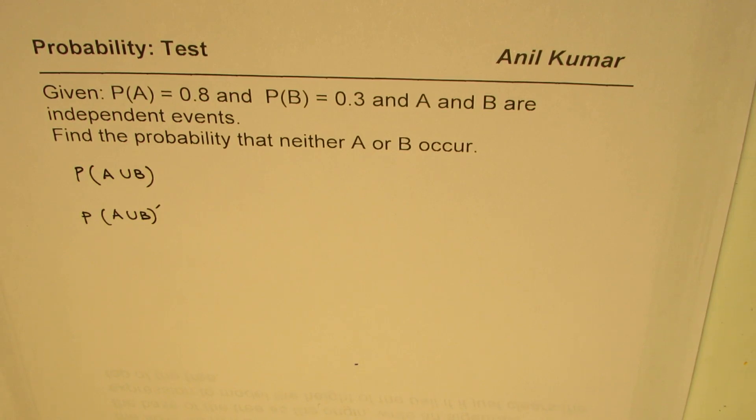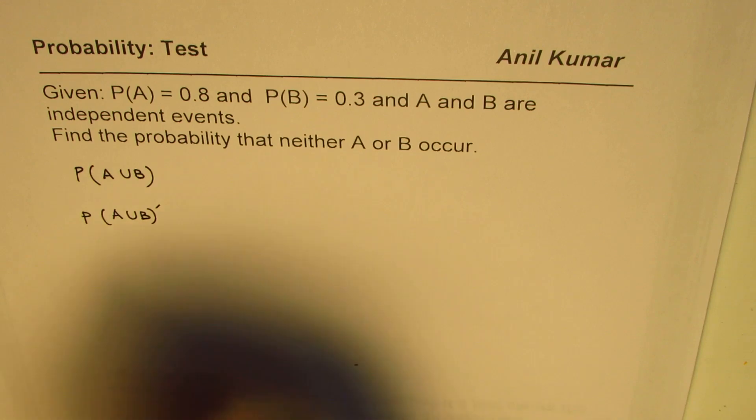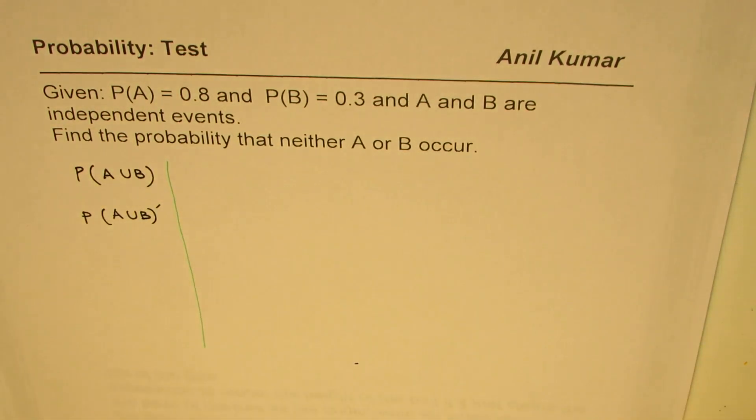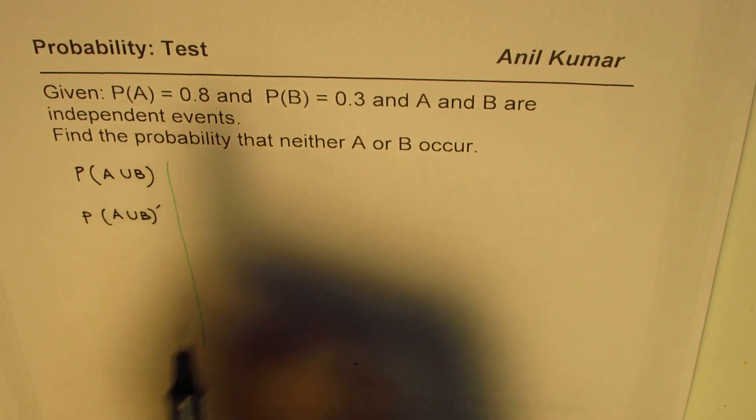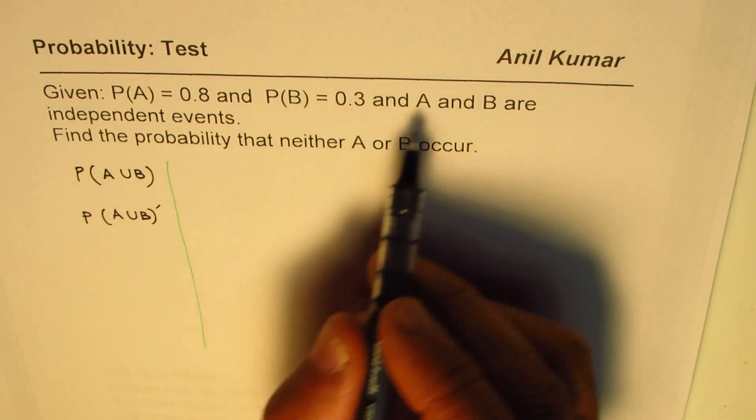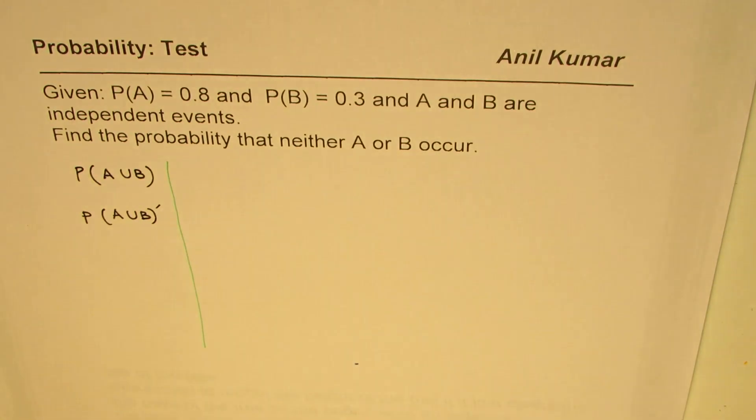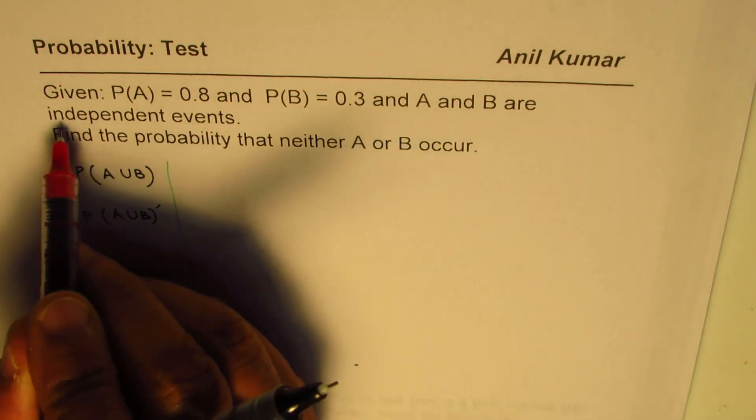I'd like you to pause the video, answer the question and then look into my suggestions. Let us see how to find probability of A or B. Now, here we are given that these are independent events. Let me underline the word independent events.